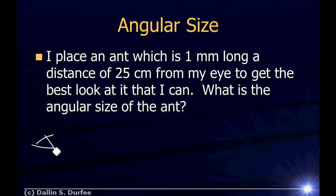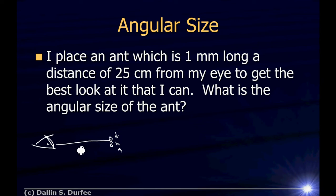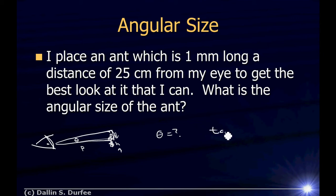Here's my eye, and here's the ant. H is one millimeter. The distance away, we'll call that P — it's 25 centimeters. If I draw a line from the ant to my eye, I have a triangle. The ant is one side, 25 centimeters is the other side, and I want to know angle theta. The tangent of theta is H over P, which means theta equals the arctangent of H over P.